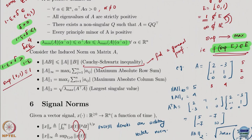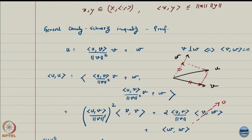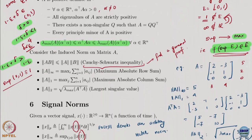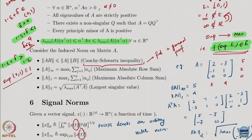The infinity norm is the maximum absolute row sum. The 1-norm is the maximum absolute column sum. The 2-norm is the largest singular value, which is the square root of lambda-max of A-transpose A. These three are the ones that get used most often. We also have the Cauchy-Schwarz inequality, which is a general inequality for all norms and is valid also for matrix induced norms.